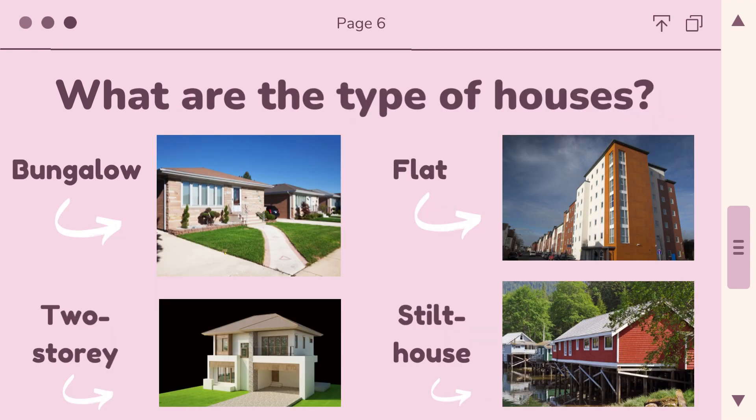The types of houses you can find: number one, bungalow — it only has one level, so there are no stairs inside. Number two, two-story house — rumah dua tingkat in Malay — so there are two floors. Number three, flat — a building with many, many floors, banyak tingkat. Number four, stilt house.